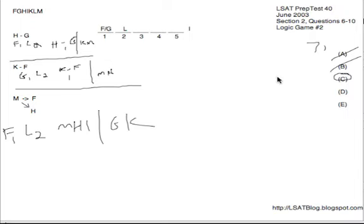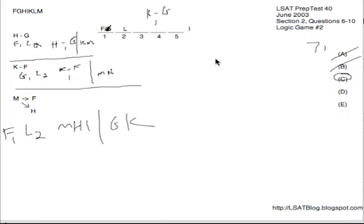I'll look at the rest though. For D, K before G would require F to be on one so that G would come later. We'd have L on two, then K before G on three, four, five, and I somewhere there as well. The problem is that when K and F are both present, we need to fit the second scenario, which we are not doing — we have F on one, not G on one. So D is eliminated. And choice E, M before G, doesn't work for the same reason that A didn't work. M and G are mutually exclusive. So C is confirmed as our answer for number seven.